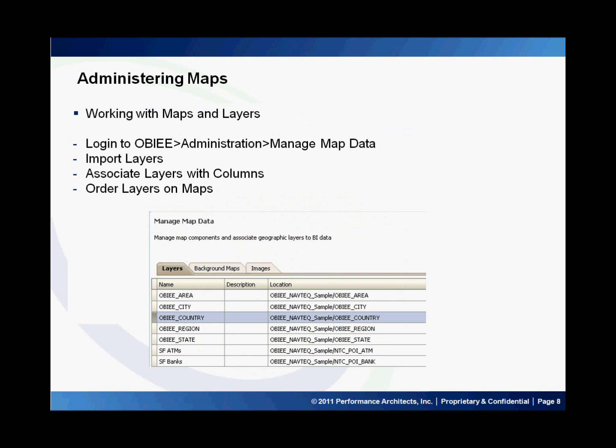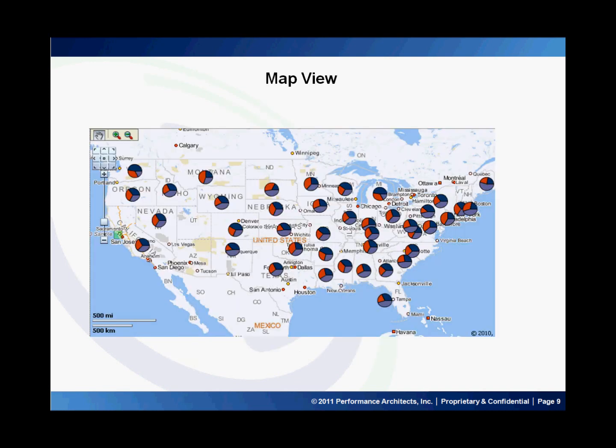The last piece is to administer the map viewer data for your subject areas. You can log into the OBIEE Presentation Services, go to Administration, and click on Manage Map Data. There, you can import the layers. Once you import the layers, you need to associate these layers with the columns from your subject areas. Once you do that, you can create map views in your analysis. This is how you create map views in your OBIEE analysis. Thank you for joining — please visit our Performance Architects how-to channel for other videos on enterprise performance management and business intelligence solutions.